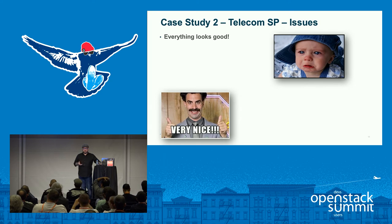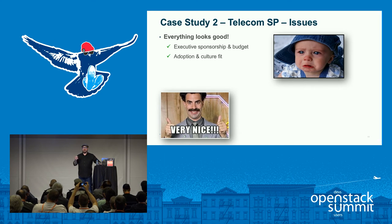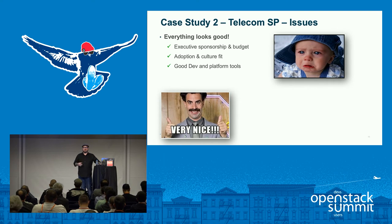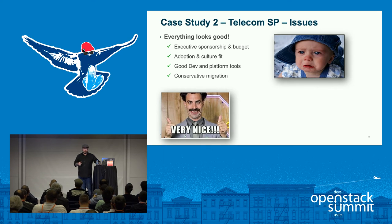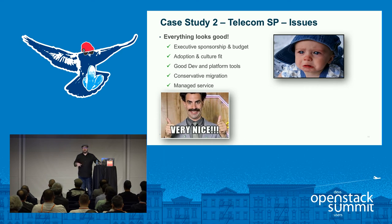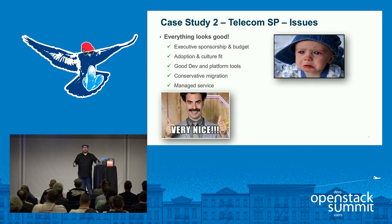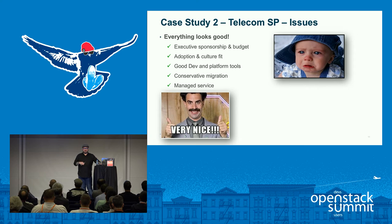Everything looked good initially — they had executive sponsorship and budget, good adoption and culture fit, and good dev and platform tools. They moved from roll-your-own Perl and Bash scripts to Ansible as a standard for provisioning and configuration management. It was a big environment, but they took a very conservative migration approach, starting with less than 1% workload and moving up from there. They went with a managed service — which isn't necessarily the panacea, but for a first foray into OpenStack, it's a reasonable option given the staffing challenges and time-to-value concerns.